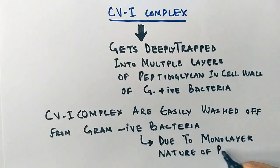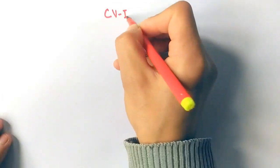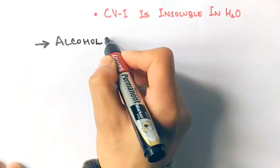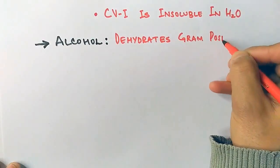The second important property of CV-I complex is that it's insoluble in water, which means it will never interact with water. Another important thing to note is that the alcohol we use in gram staining technique dehydrates gram positive bacteria only.